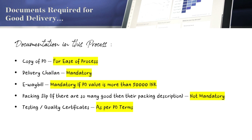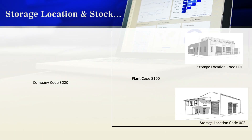Now there is a consideration part you should be aware of before the SAP demonstration. Assume you have a company with code 3000, which has a plant with code 3100. That plant has two storage locations — 001 and 002 — inside the same warehouse. This distinction between warehouse and storage location will be explained in more detail later in this video.